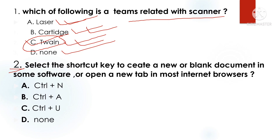Question 2: Select the shortcut key to create a new or blank document in software, or open a new tab in most internet browsers. Option A: Ctrl+N. Note: Ctrl+A is select all, and Ctrl+U is underline.